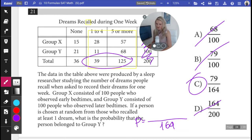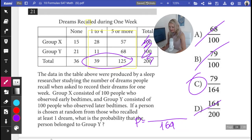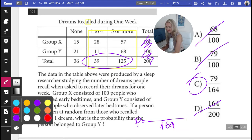But let's just check. 79 is the number of desired outcomes. Who was the desired? What is the probability that the person belongs to Group Y? Okay, so now I'm just going to do the desired outcomes in red. They belonged to Group Y.